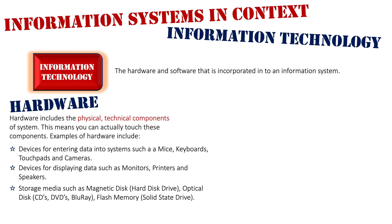We also have storage media — things that I put in and out of my system. Magnetic disks, such as my hard drive or external drives; optical disks, which are CDs, DVDs, and Blu-rays; and flash memory, such as my solid state drive, SD cards, or USB flash drives. They are all classified as hardware.